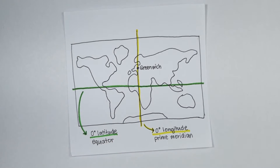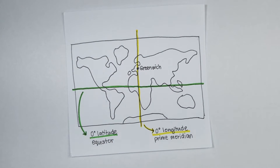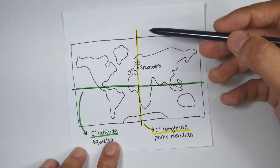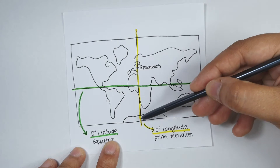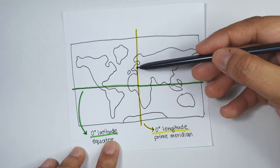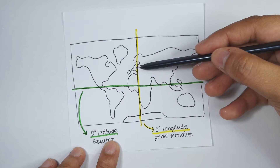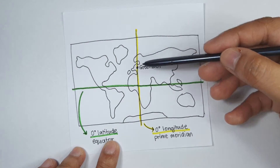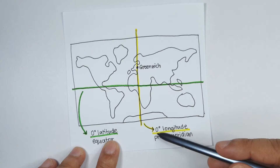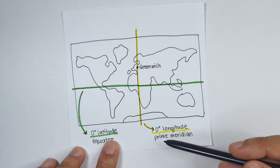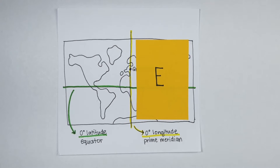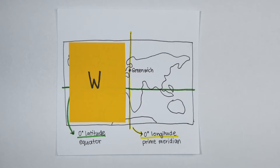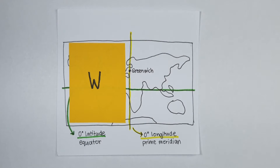Quick recap: longitude is the imaginary vertical line. At the prime meridian where Greenwich, England is located, the longitude is defined to be zero degrees. Now to the right of the prime meridian is east, while to the left of the prime meridian is west.